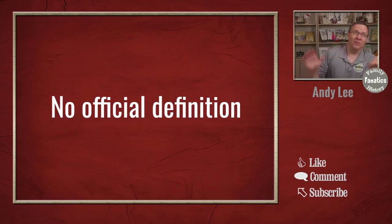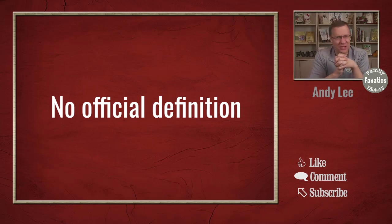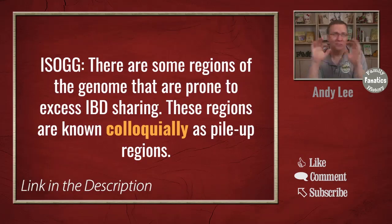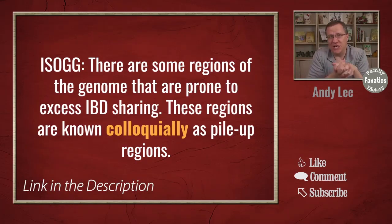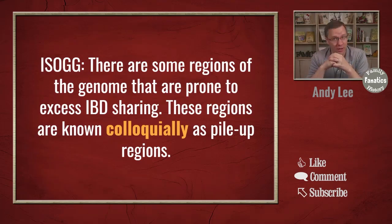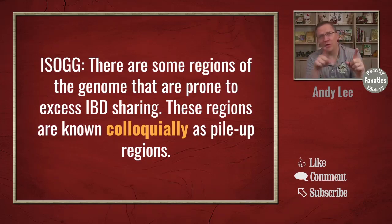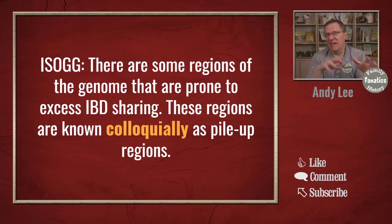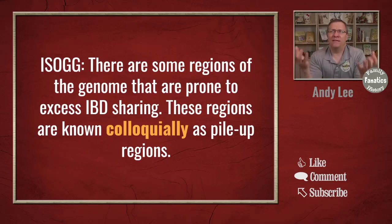The first problem is that there's really no official definition. If you look on the ISOGG website, you can find a pseudo-definition: there are some regions of the genome that are prone to excess IBD sharing. These regions are colloquially known as pileup regions. I've highlighted that word 'colloquially' because it basically means that's what we call them, but we don't necessarily have a good definition of them.